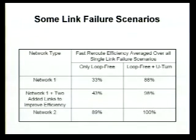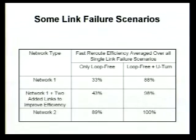For Network 1 with only loop-free alternate, traffic efficiency was about 33%. Adding U-turn alternate was a big jump — from 33% to 88%. For Network 2, even with loop-free alone we reached 89%, which is quite reasonable already. With loop-free plus U-turn, we achieved 100% coverage. A few destinations were not reachable, but those destinations were not carrying any traffic under no-failure conditions, so we still got 100% traffic coverage.